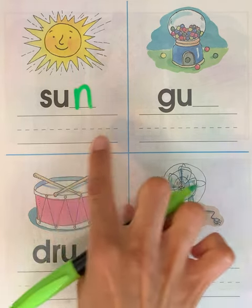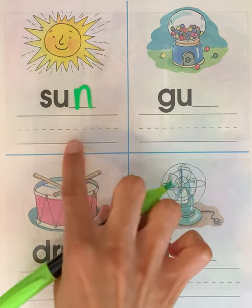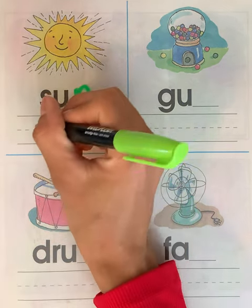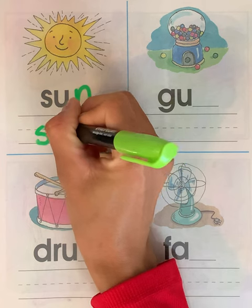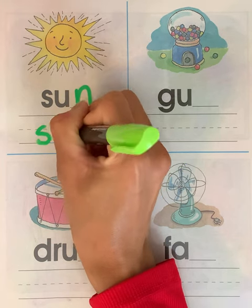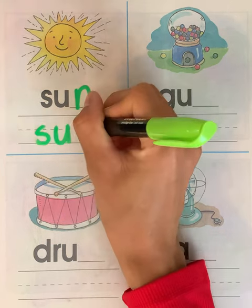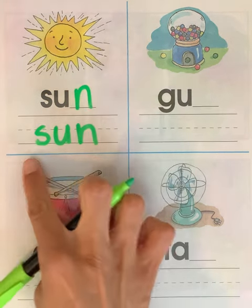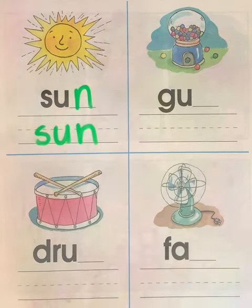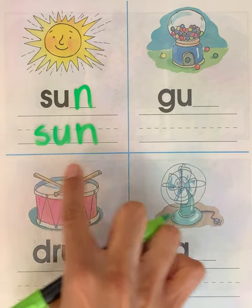Now we're going to write the word sun on this line. S. U. N. Sun. Can you say this word with me? Sun.